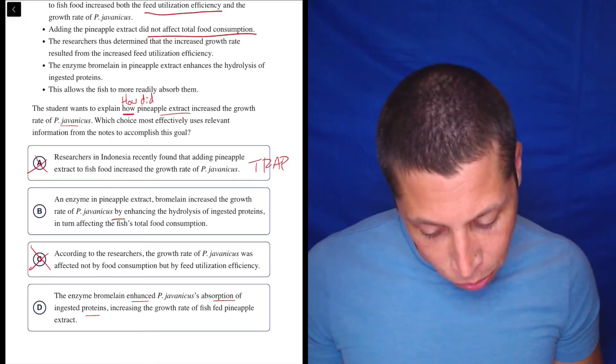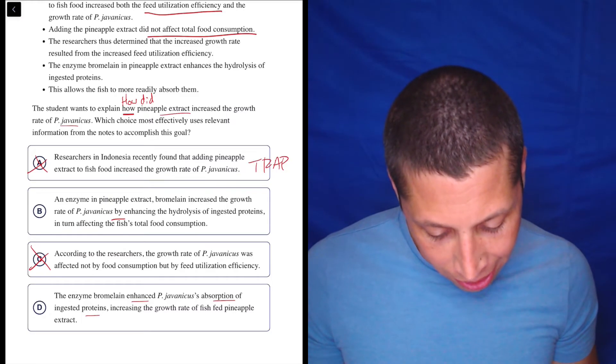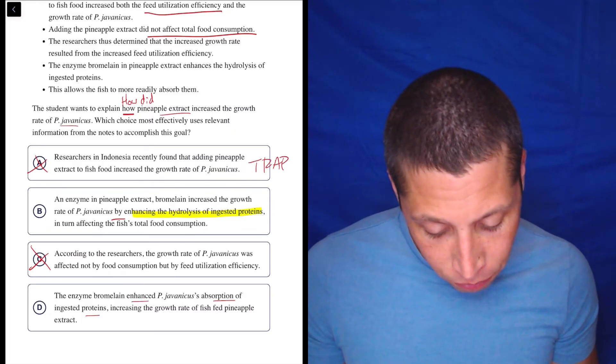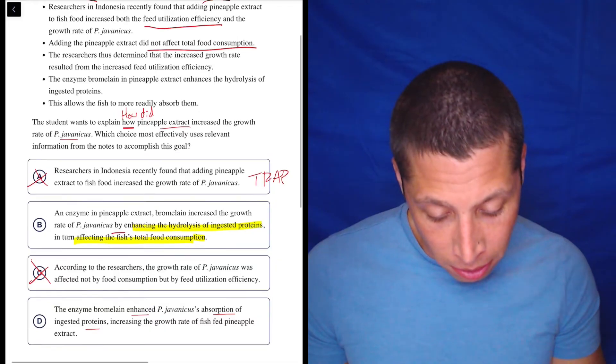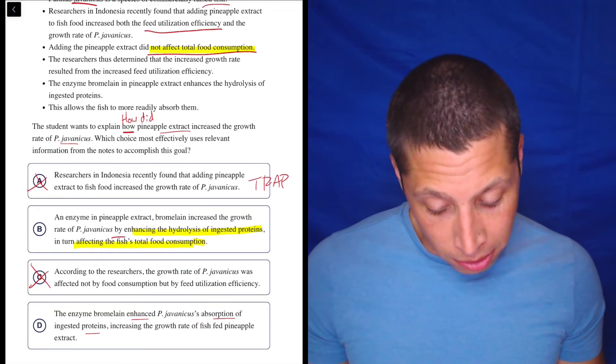So wait, what do we got here? Let's do the highlight. I'm getting confused. An enzyme in pineapple extract, bromelain, increased the growth rate by enhancing the hydrolysis of ingested proteins, in turn affecting the fish's total food consumption. But this says it did not affect it. That seems wrong.